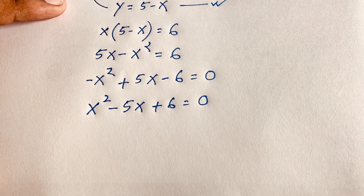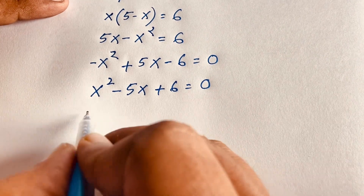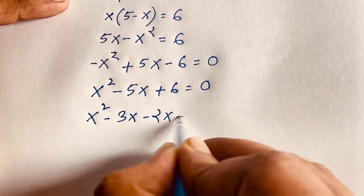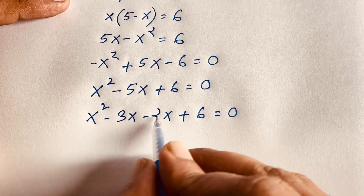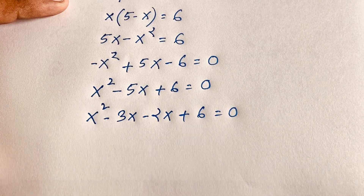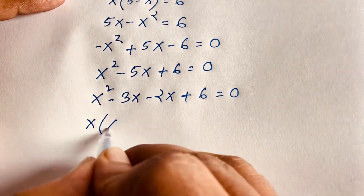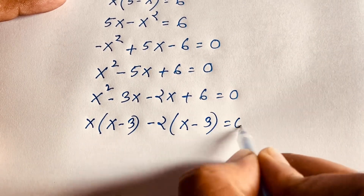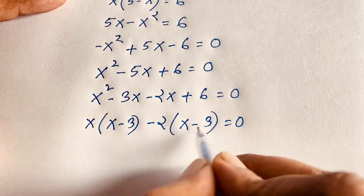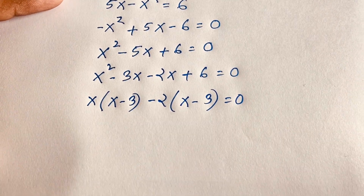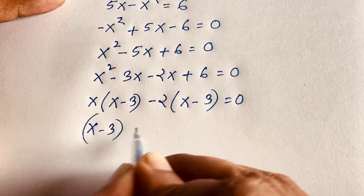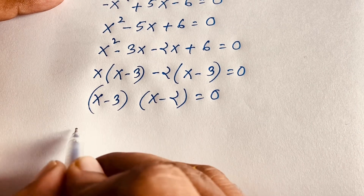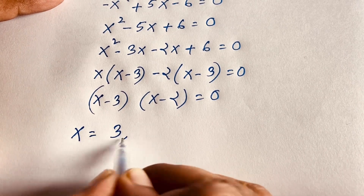Factoring the quadratic x² − 5x + 6 = 0: we split as x² − 3x − 2x + 6 = 0, since 3 × 2 = 6 and 3 + 2 = 5. Factoring gives x(x − 3) − 2(x − 3) = 0, so (x − 2)(x − 3) = 0, meaning x = 3 or x = 2.